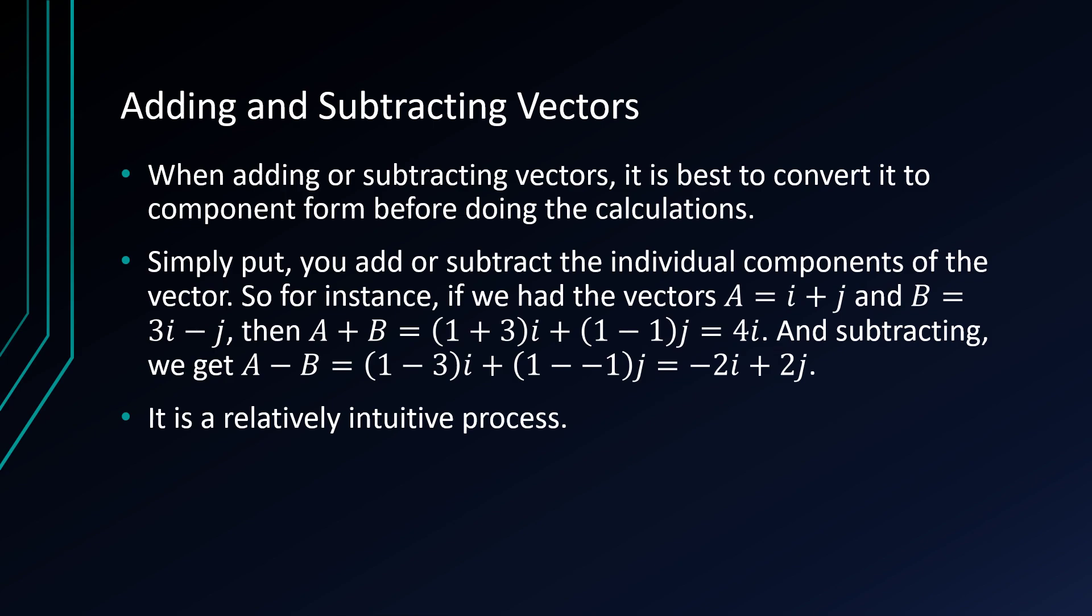You just add or subtract the components of the vector. So if we had i plus j and 3i minus j, then a plus b is where you take the 1i and the 3i's and add them together, so you get 4i. And here you get the 1j, so j minus j, that's 0. So you just get 4i as the vector, which can alternatively be written as 4i plus 0j.